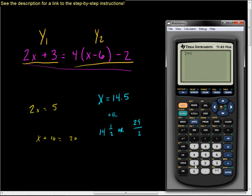So 2 times 14.5 plus 3. I get 32. Okay. On the other side I get 4 times the quantity 14.5 minus 6, close that parenthesis, minus 2. I get 32. So 32 equals 32 is a true statement. Therefore, X must be that. That's how you use your calculator to solve these linear problems. Thank you.